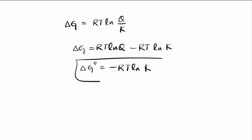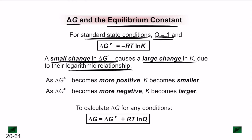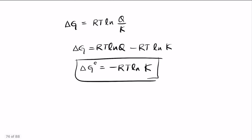A small change in delta G° causes a large change in K because of the logarithmic relationship. If delta G° becomes more positive, K becomes smaller; if delta G° becomes more negative, K becomes larger. This tells us that spontaneous forward reactions have large K values, while reverse reactions are generally non-spontaneous. The general formula for delta G at any condition is delta G equals delta G° plus RT ln Q.